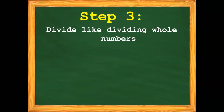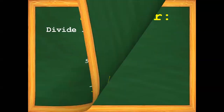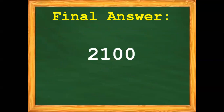Step 3: Divide like dividing whole numbers. 10,500 divided by 5. 1 divided by 5 cannot be. 10 divided by 5 is 2. 2 times 5 is 10. 10 minus 10 is 0. Bring down 5. 5 divided by 5 is 1. 1 times 5 is 5. 5 minus 5 is 0. Since we have 2 zeros remaining in our dividend, we put them up. So the final answer is 2,100.